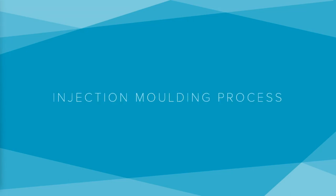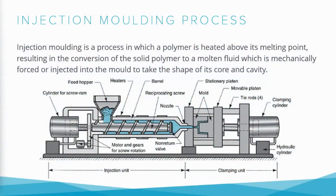We will start with injection molding process. Injection molding is a process in which plastic material is melted and injected into the mold to form a product. This is a schematic diagram of the injection molding process where on the left-hand side we have the injection unit and on the right-hand side we have the clamping unit. The injection unit is responsible for injecting the plastic material into the mold, whereas the clamping unit is responsible for opening and closing of the mold.